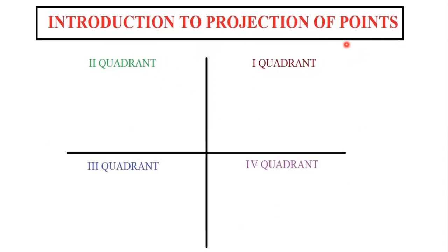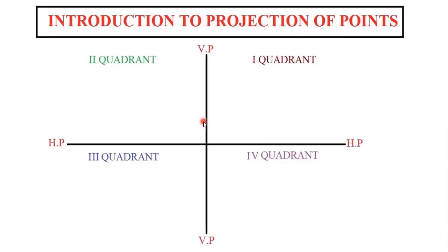So first concept is just consider this as four quadrants: first quadrant, second quadrant, third and fourth quadrant. Now we are going to introduce two important words. One will be HP — HP is the horizontal plane — and VP is the vertical plane.